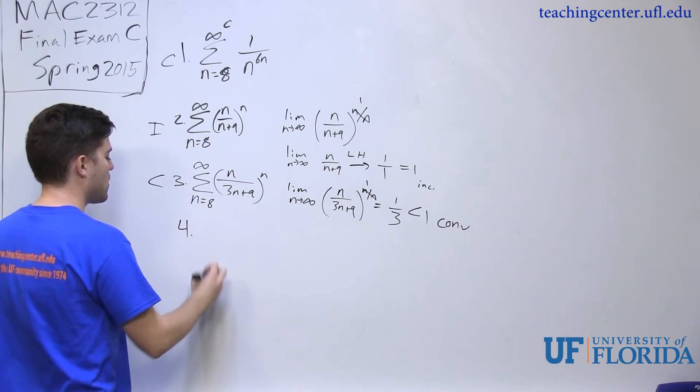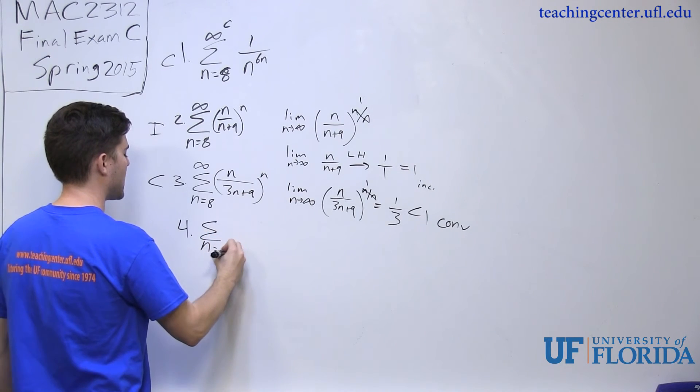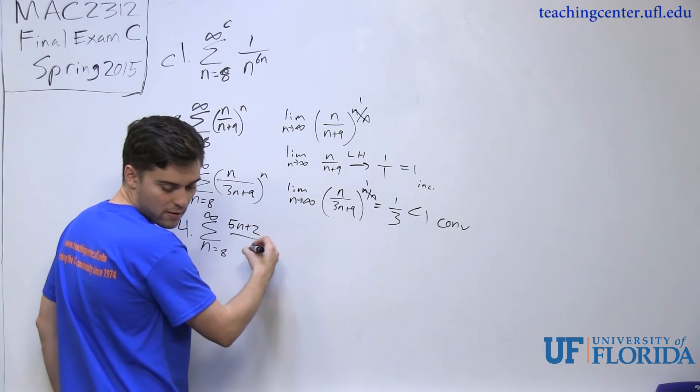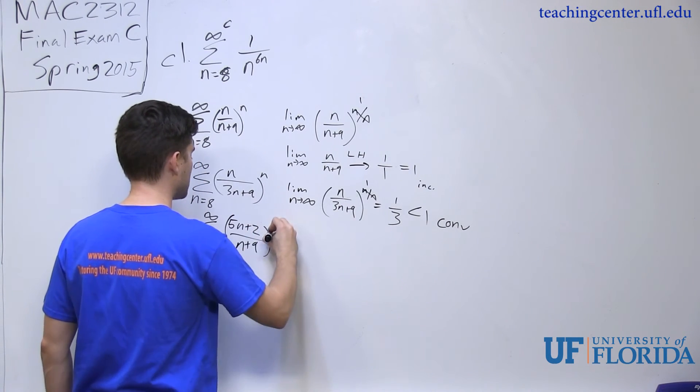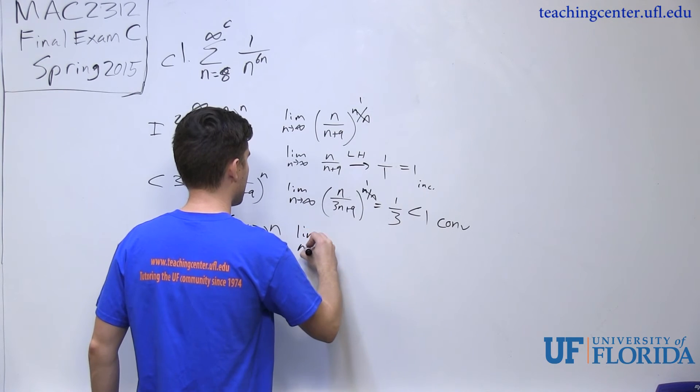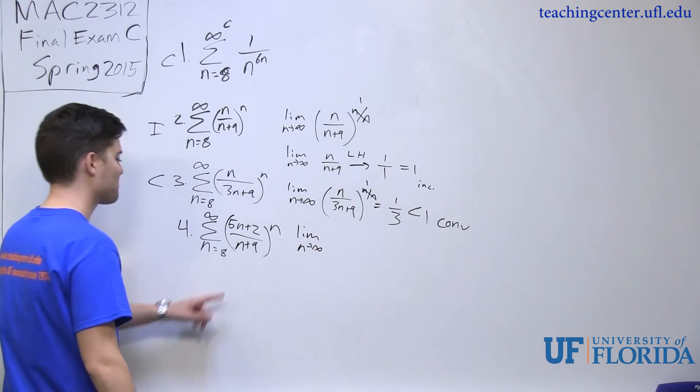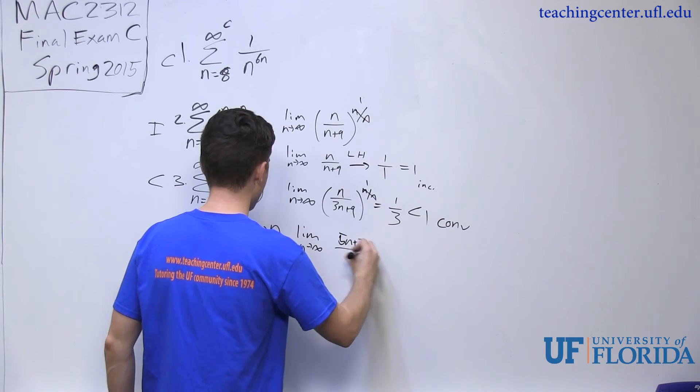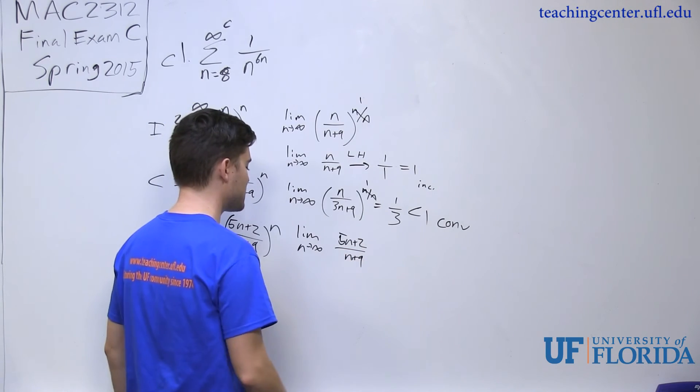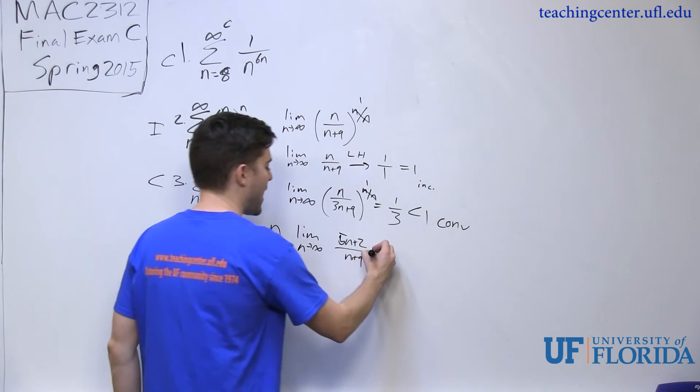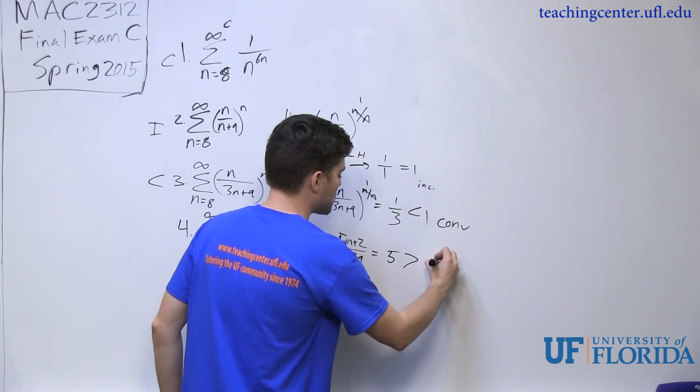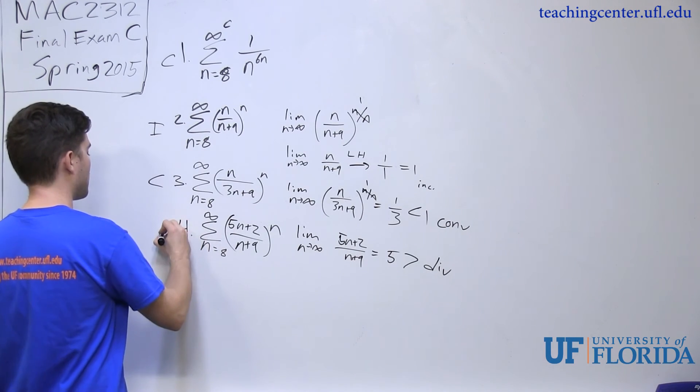Now I have number 4. Number 4 says n equals 8 to infinity, and I have 5n plus 2 over n plus 9, that's to an n power as well. If I apply root test to this, limit as n approaches infinity, 5n plus 2 over n plus 9. And as with the last 2, this n to a 1 over n power just becomes 1. So I'm just going to leave it as that. It's indeterminate, so I derive it. And when I do that, I end up getting 5. 5 is greater than 1, so therefore this is divergent. So number 4 was divergent.